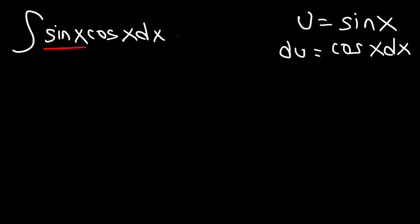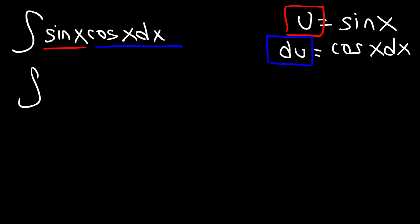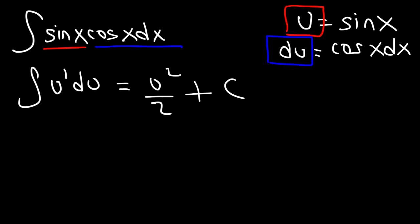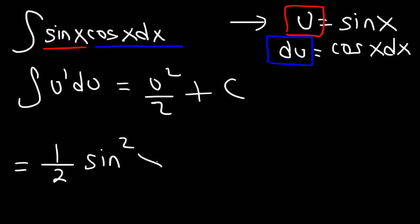So let's substitute sine with the u variable, and let's replace cosine x dx with du. This becomes the integral of u du. Using the power rule, this is going to be u squared divided by 2 plus some constant C. Now we need to replace u with sine x, so the answer is going to be one-half sine squared x plus C.